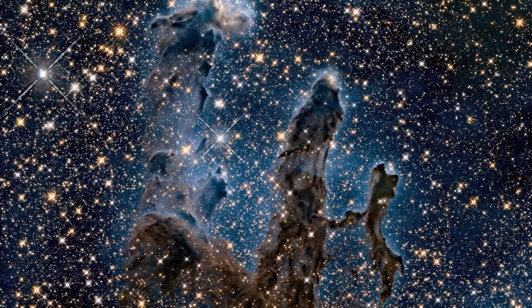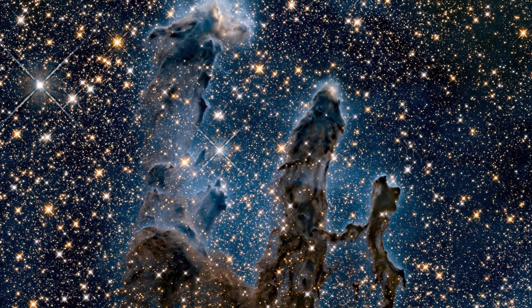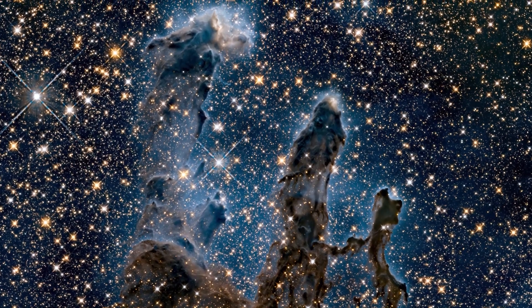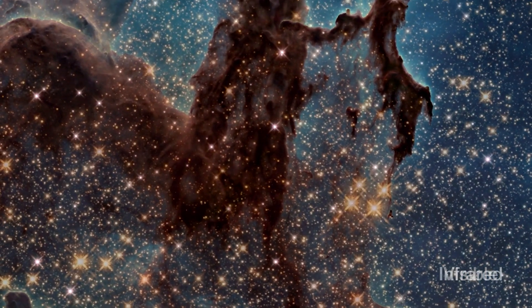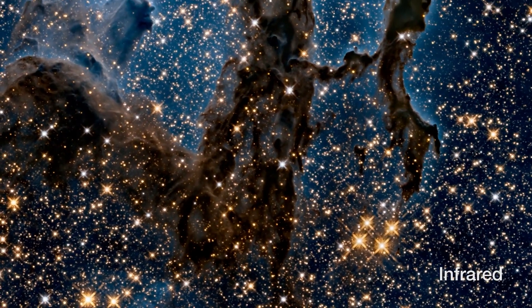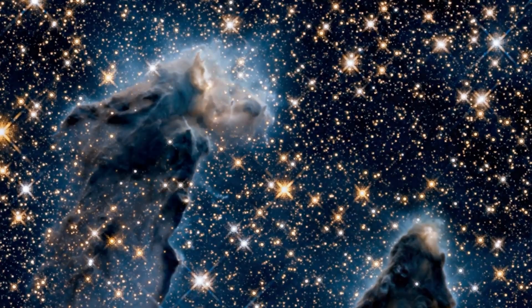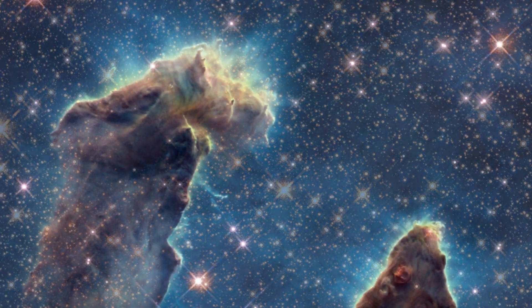However, they were captured by the Webb Telescope's infrared image in the form of many protostars. These appear as clusters of dusts and gas, each several times larger than our solar system, appearing as tiny red dots against the background of the pillars.